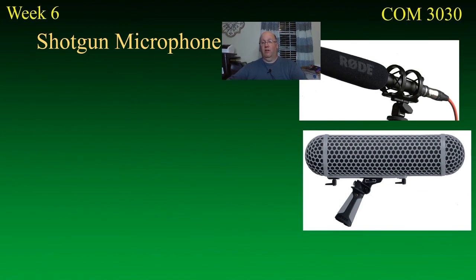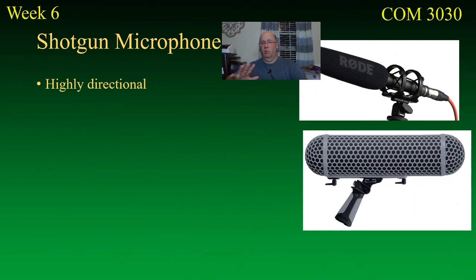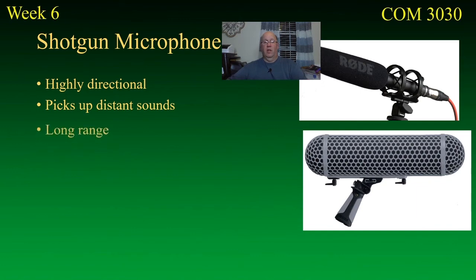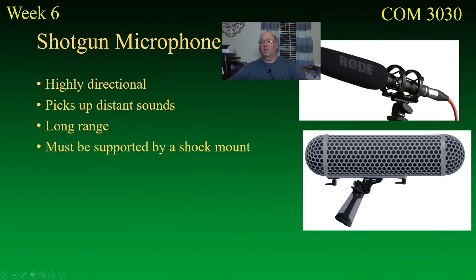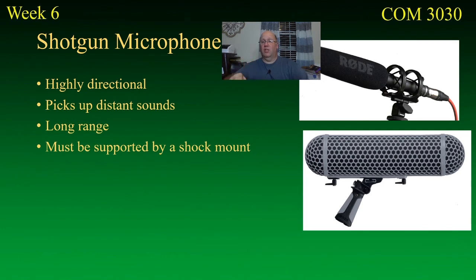Shotgun microphones are a completely different animal. They are highly directional — pointed like a gun at whatever you want to hear, and that's pretty much what you get. If you're off to the side you won't be heard as much; if you're behind it, you're not heard at all. They pick up distant sounds — if you're trying to get the sound of wildlife in the distance, that's your microphone. You really need a shock mount: the microphone is literally suspended by rubber bands so it makes no contact with the mount, deadening all vibrations. That's attached to a boom pole, which a person carries to point the microphone without actually touching it.